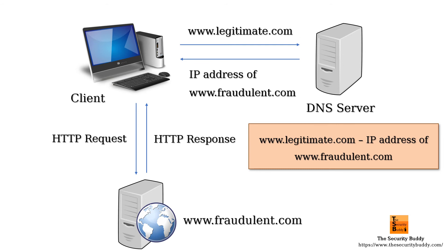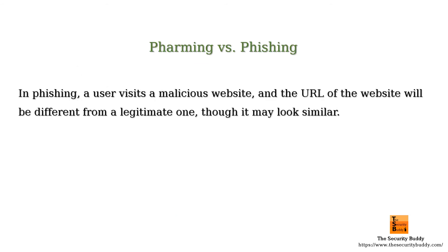What is the difference between farming and phishing? In phishing, attackers usually send a victim an email or text containing an attachment or a link. When the user clicks on the link or opens the attachment, his computer gets infected by malware, or the victim is deceived into revealing sensitive data. In phishing, a user visits a malicious website, and the URL of the malicious website will be different from a legitimate one, though it may look similar.